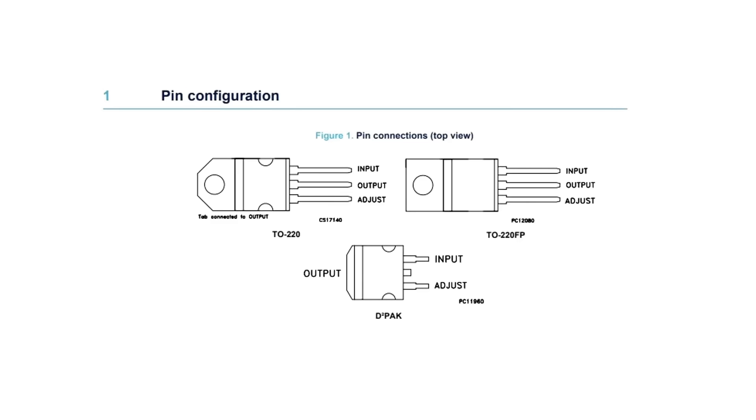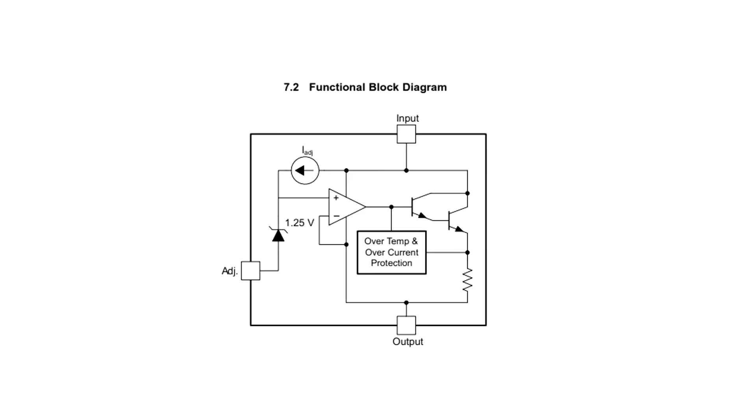So, we know that the chip has three pins: input, output, and the adjustment pin, or control pin. It includes its own reference source, an output stage based on a bipolar transistor, and a protection unit for current and overheating.